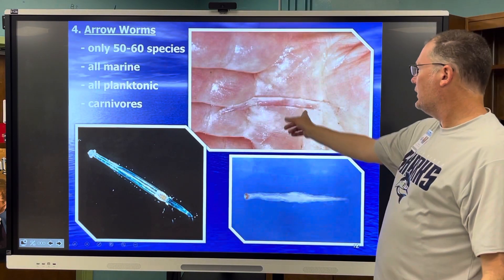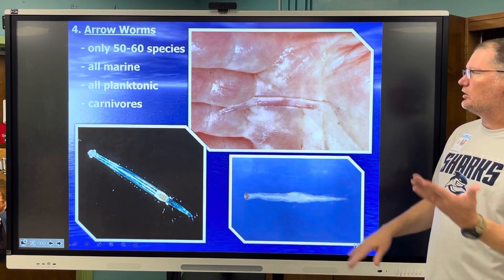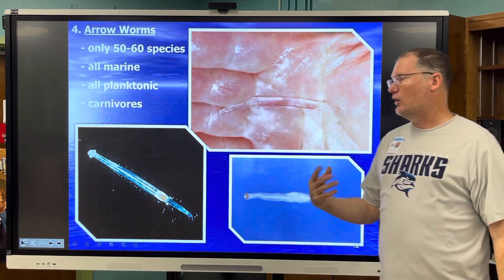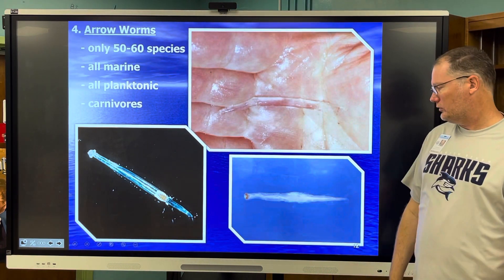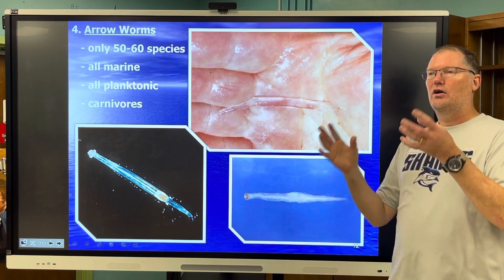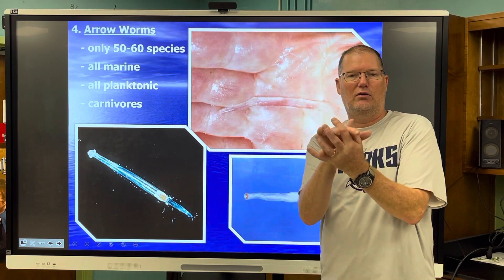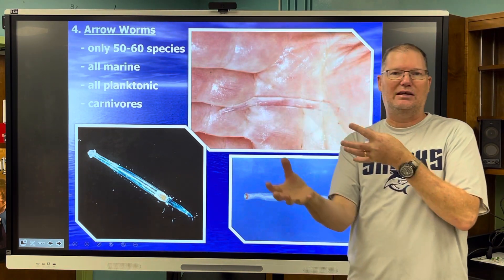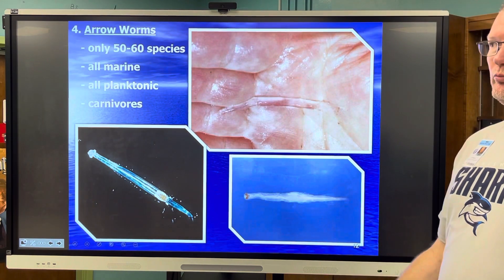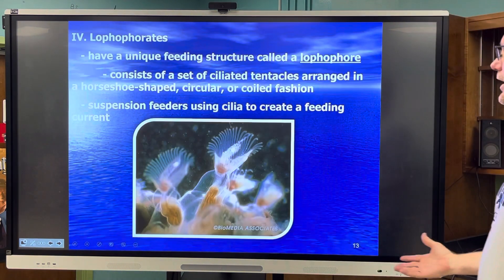Arrow worms look like this — if you're holding one in your hand, they're almost clear. All are marine, all planktonic, and all carnivorous. They eat other things. Remember, carnivore doesn't necessarily mean big teeth — it just means it eats another animal, or zooplankton, or something like that.